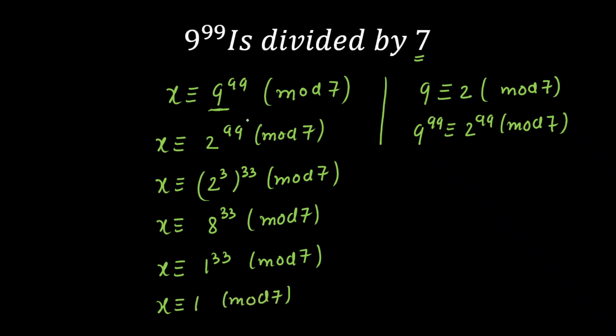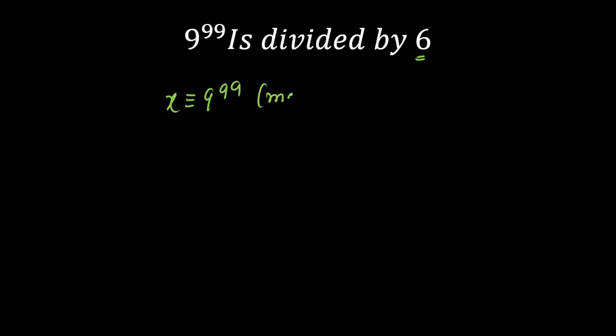That means when we divide 9 raised to the power 99 by 7, the remainder will be 1. Now I'll do one more thing — I'm going to change this to 6 and see what the remainder will be. You can take this as a challenge; feel free to pause the video and try this by taking 6. I'll be solving 9 raised to the power 99 divided by 6 in the next slide. Here I've done a modification: earlier we divided 9 raised to the power 99 by 7. Now you have to divide by 6 and calculate the remainder. Please feel free to pause the video and try this question.